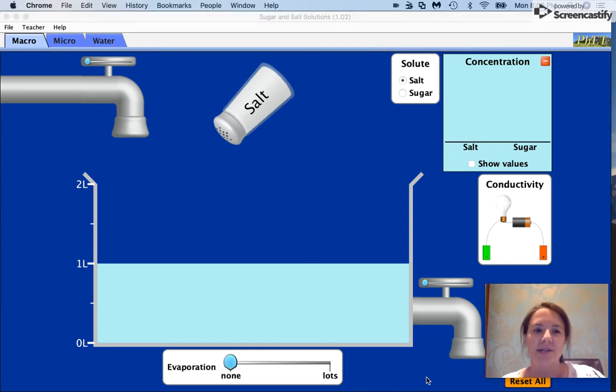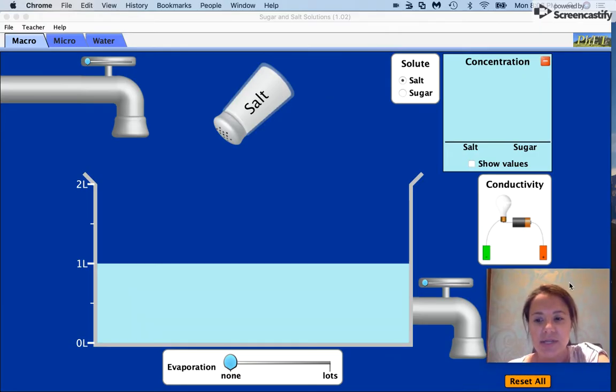Hello everyone. Today we're going to talk about why ionic compounds conduct electricity and why covalent compounds do not. We're going to use two representative samples to aid in that explanation.